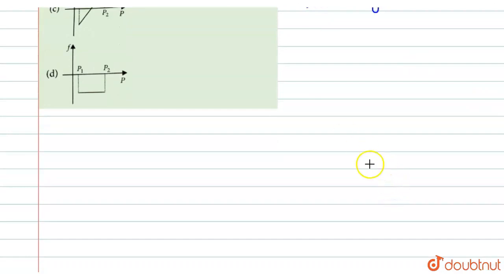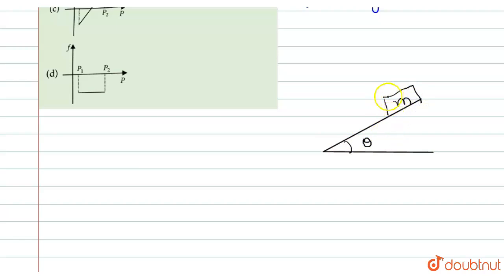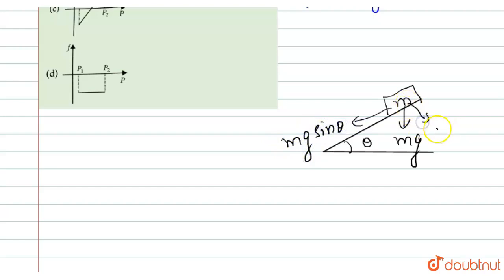Now we draw a second diagram to understand the case when p is large. Again we have the inclined plane with the block of mass m, and mg is resolved into two components: mg sine theta along the plane and mg cos theta perpendicular to the plane.